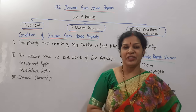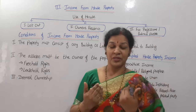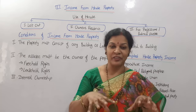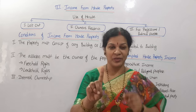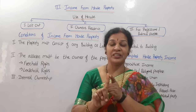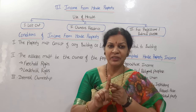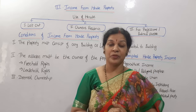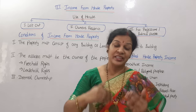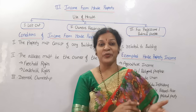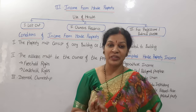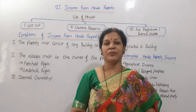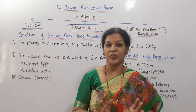Coming to income from house property: when we have a house, a building, or any property which is permanent on the earth, we can earn income from it in two ways. One is by letting the house — giving it for rent purpose. The other is by selling. When we are letting for rent purpose, only then we can call it income from house property. If you are selling, it is not income from house property — it comes under another category.